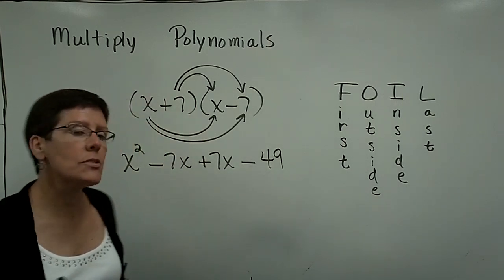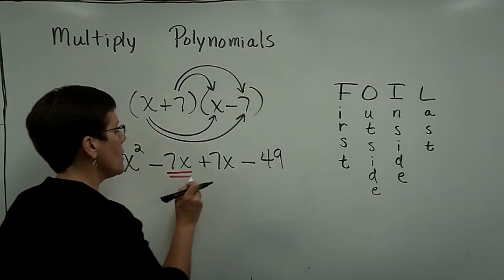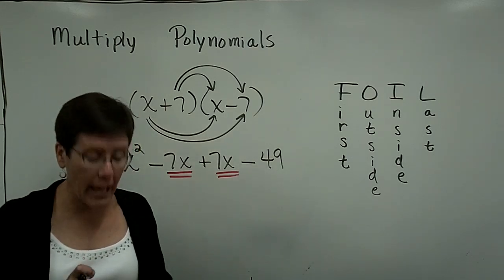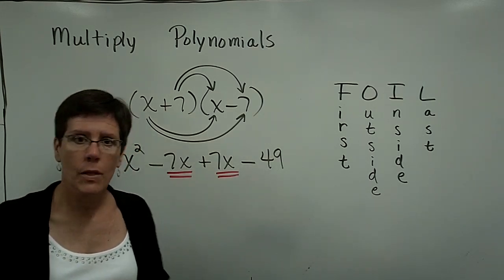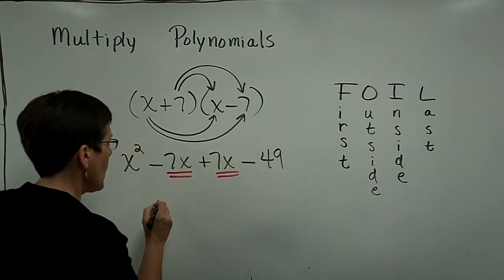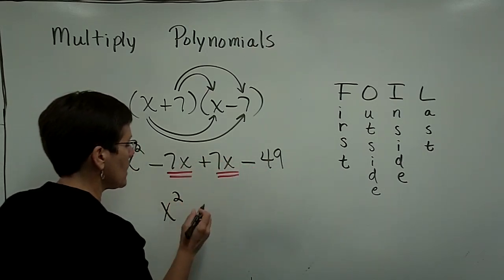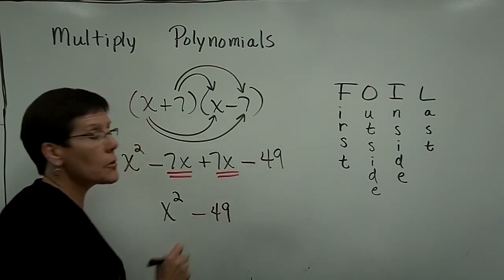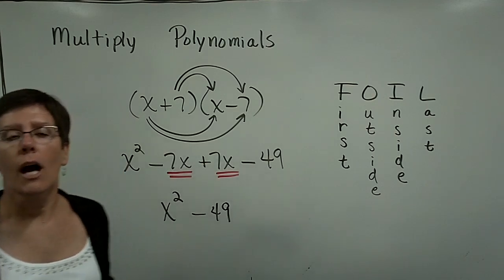When you multiply these two types of binomials together, what I call the outer and the inner terms that are like terms, they add together to be zero. Minus 7x plus 7x is nothing. And all you're left with in this particular circumstance is this x squared and this minus 49. That's a special product.